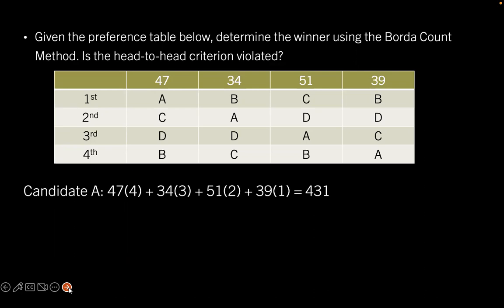So remember in this case, we have four places. So the first place vote gets four points per vote. Second is three. Third place gets two votes and the last place finish gets one. So candidate A, after calculating, receives 431 votes.